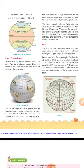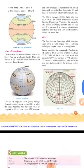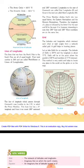Therefore, the longitude of a place is followed by a letter — E for east longitudes and W for west longitudes. It is interesting to note that 180 degrees East and 180 degrees West meridians are on the same line.